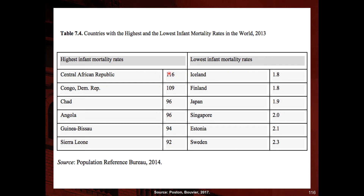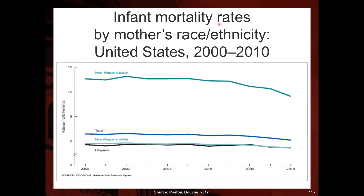To illustrate the variation further: in the Central African Republic, 116 babies died before reaching age one per 1,000 live births, while in Iceland only 1.8 did. In the US, infant mortality rates vary substantially by the mother's race and ethnicity. Data from 2000 to 2010 breaks down infant mortality by the race/ethnicity of the mother.